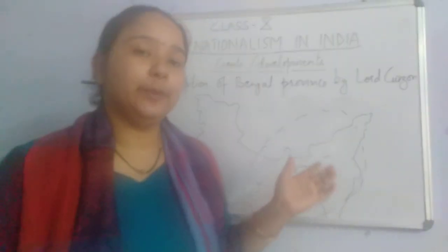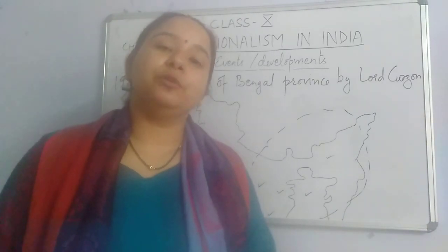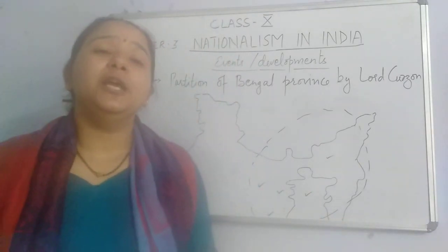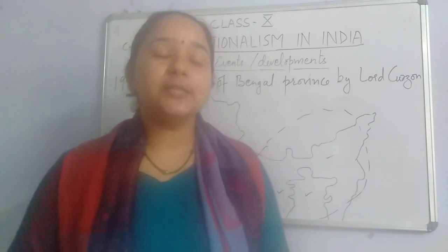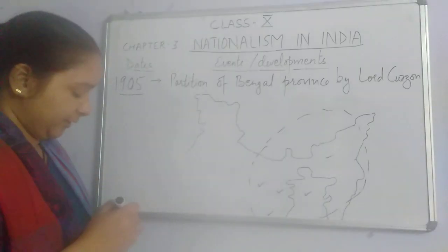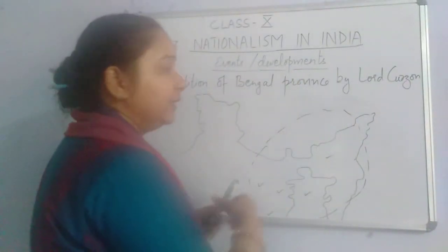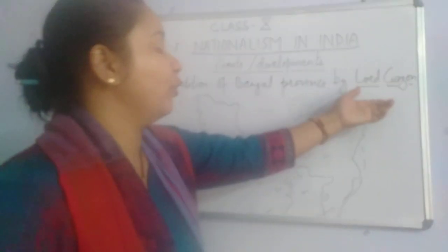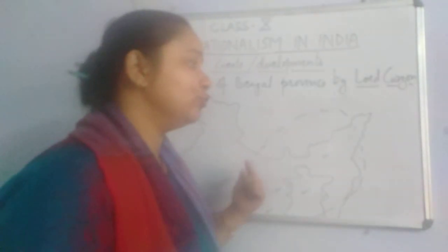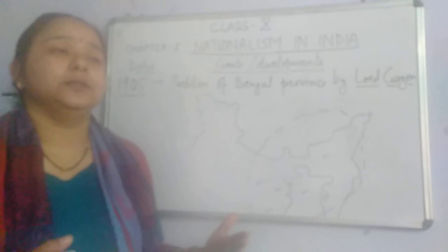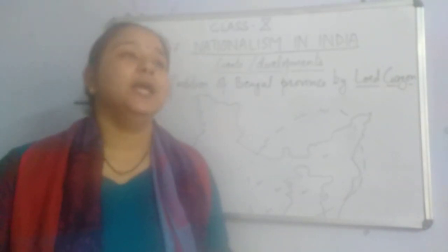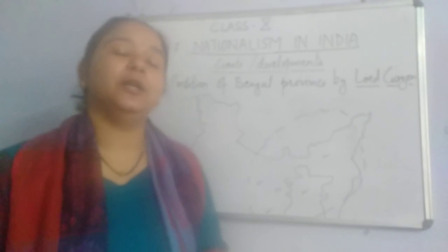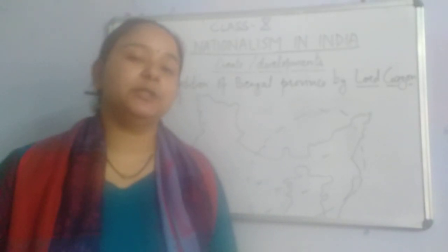This is an important event in Indian history because when we talk about the moderates and the extremists, a sudden change came in ideology — why was there a difference in ideology among Indian leaders? This happened in the year 1905, when an important decision was taken by the British government under Lord Curzon, who was the then Governor General of British India. The decision was to divide the Bengal Province into two parts, and the young leaders who had joined the Indian National Congress became strongly against this decision. The people of this province were against this decision because they never wanted this division.